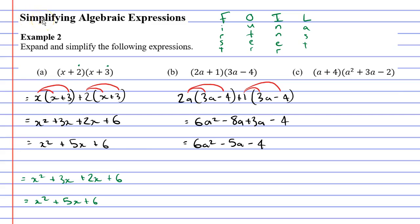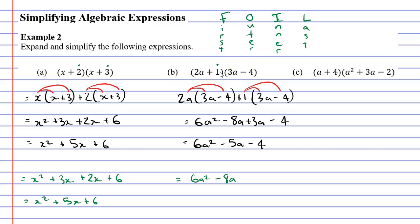I've had a change of heart — I'll show you the FOIL method once more, just for question B. It can't be used for question C anyway. First step: the first terms in each set of brackets are 2a and 3a, so 2a times 3a is 6a squared. Outer step: the outer terms are 2a and minus 4; 2a times negative 4 is negative 8a. Inner step: the inner parts are 1 and 3a.